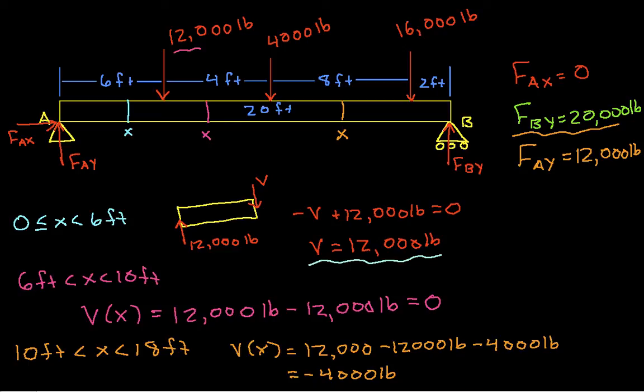Similarly, if we look at a value of X between 18 feet and 20 feet, without going through all the work because I'm running out of time and space, we will have that V(X) is equal to... whoops, I missed adding in the 4,000. Let's try this one more time. This is minus 20,000 feet.